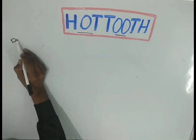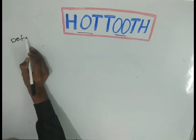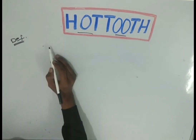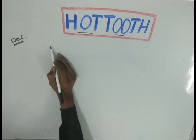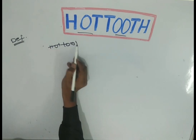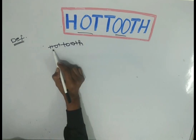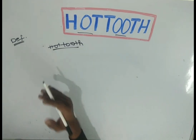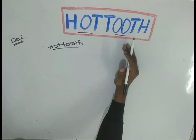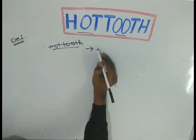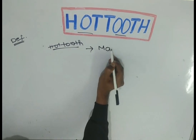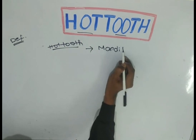Coming to the definition: a tooth that is difficult to anesthetize is known as a hot tooth. It is most commonly seen in mandibular molars.